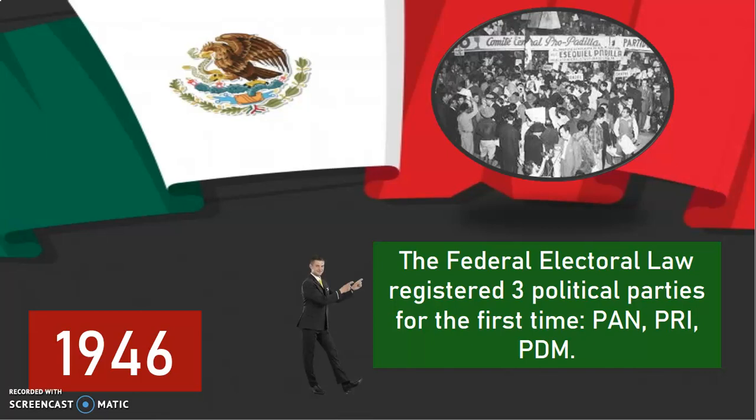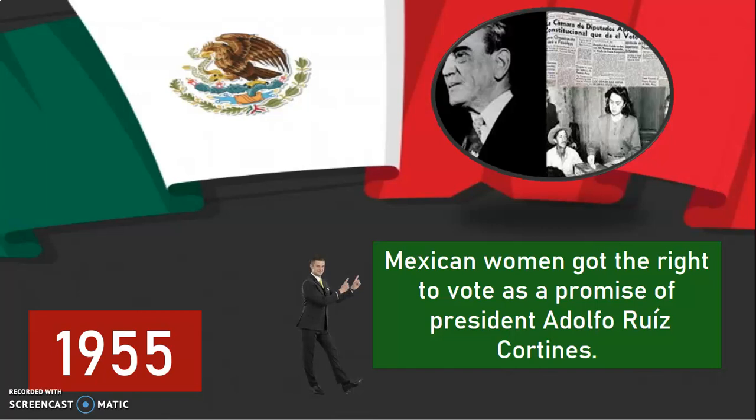In the year 1955, Mexican women got the right to vote as a promise of President Adolfo Ruiz Cortez.